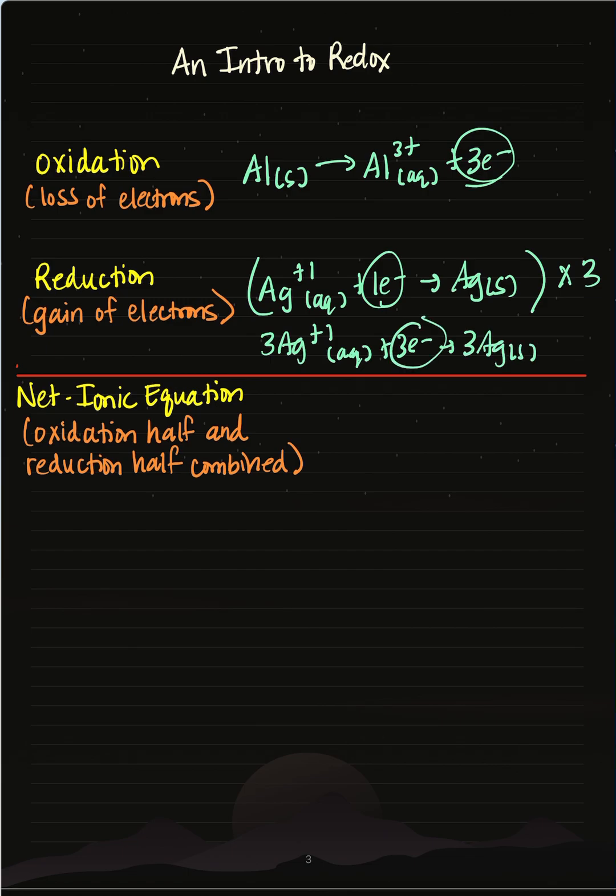Now that my electrons are balanced, so I've lost three and gained three, I can add up the remaining of my half reactions to give me Al solid plus three silver ions.